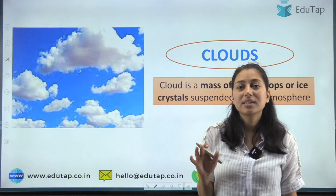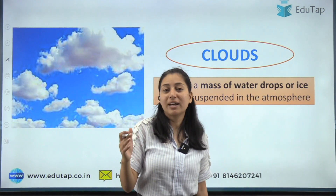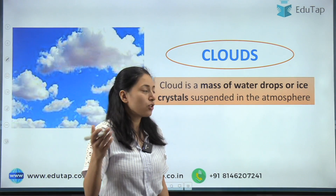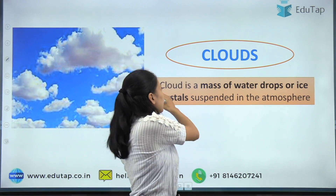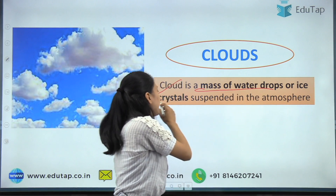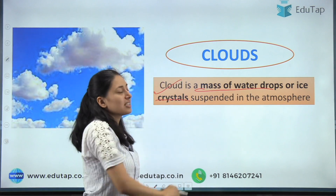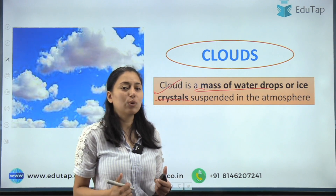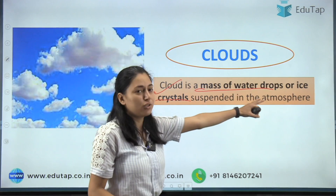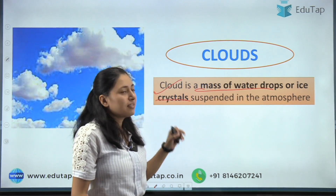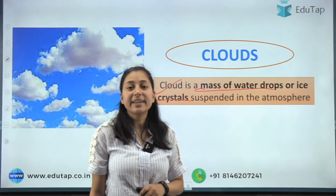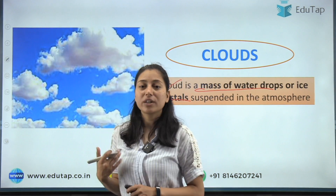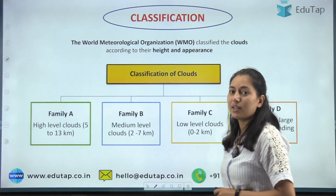Basically, we have all read about the water cycle and how clouds are formed. Clouds are a mass of water droplets and ice crystals suspended in the atmosphere. Now let's see what the classification of clouds is.